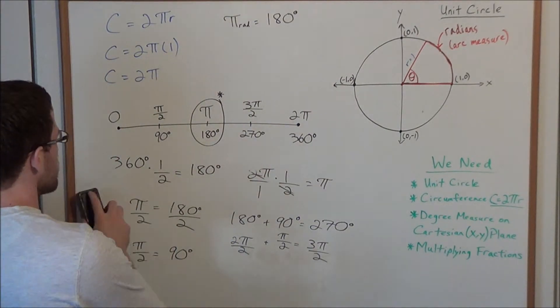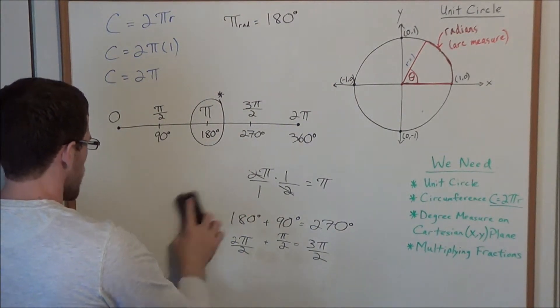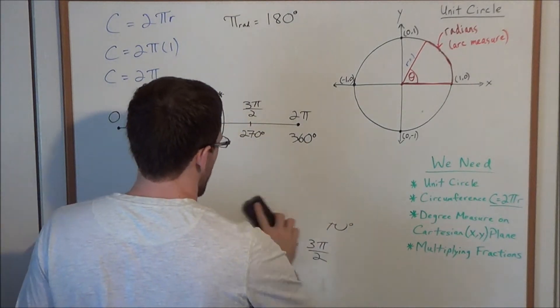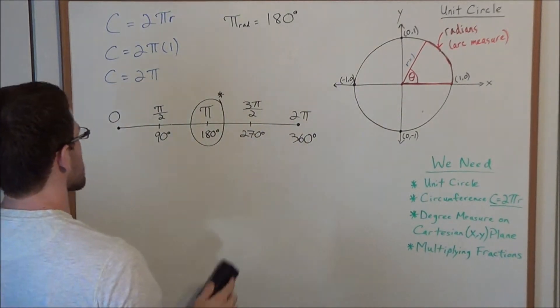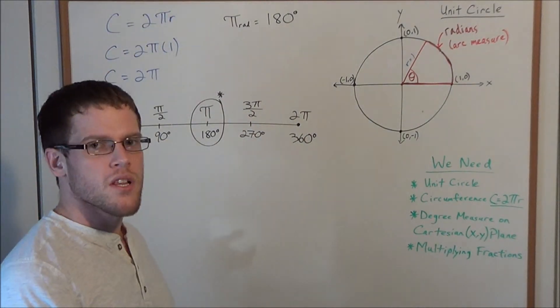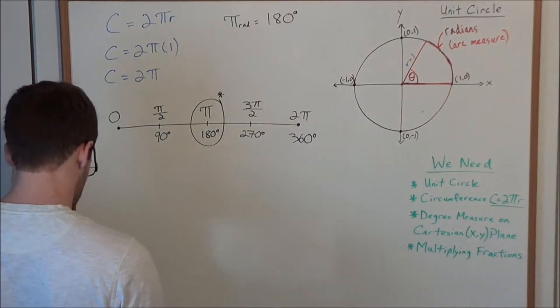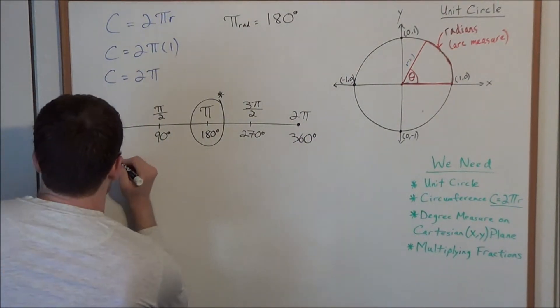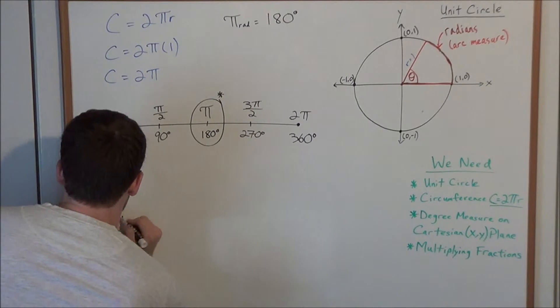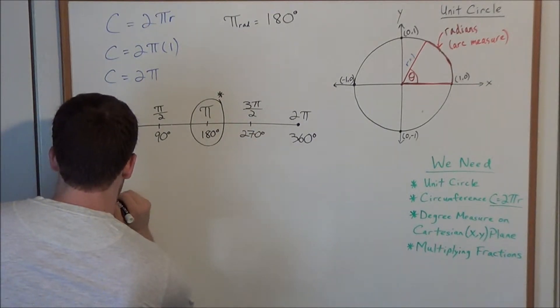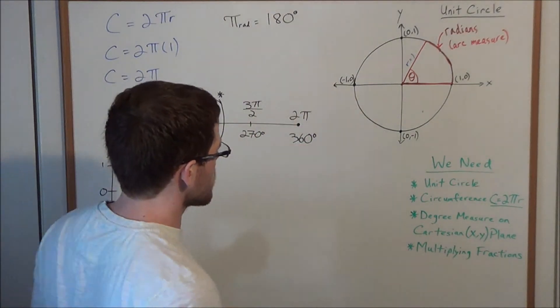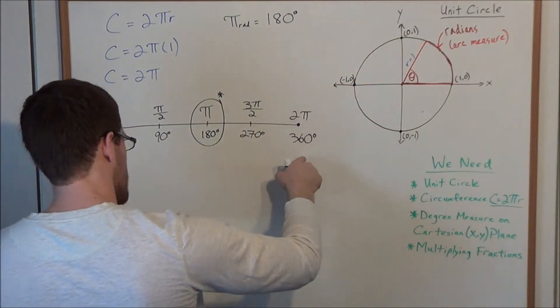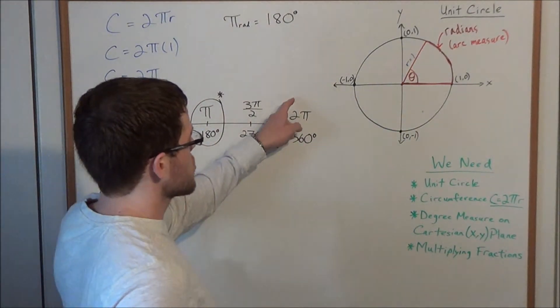So now, why do we use radians? Well, think about a graph of, let's say, sine of x. When we look at a graph of sine of x, typically we graph this, we're used to graphing this in degrees. But what do you notice? If we spin 360 degrees, this is equal to 2π radians.